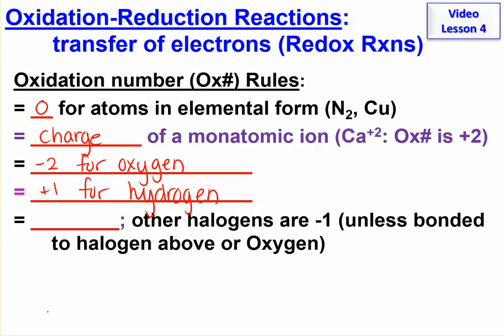And then for the halogens, it's minus one, but unless it's bonded to oxygen or a halogen above. In other words, like if chlorine is bonded to fluorine, which is above it, then it may not be minus one.